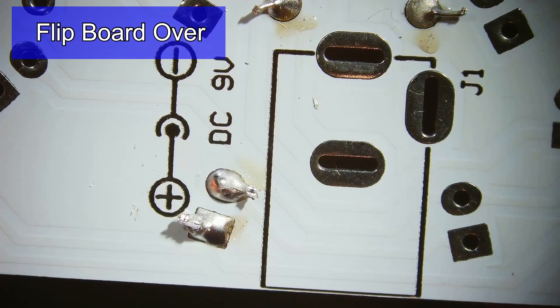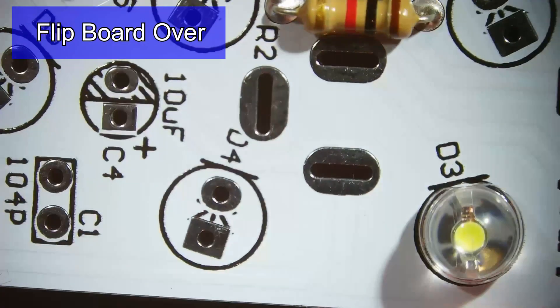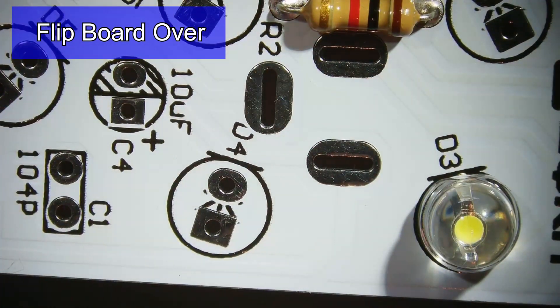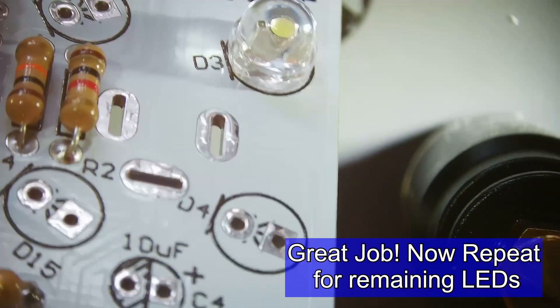Now we're going to flip the board over and check it out from the other side. Looks like our LED is nice and flush with the board.